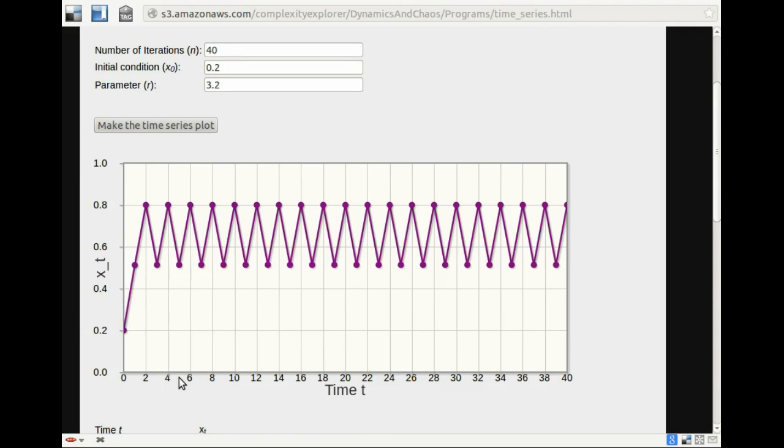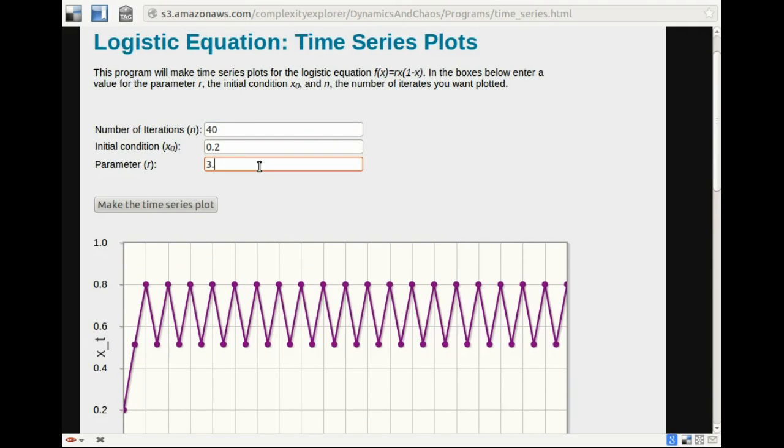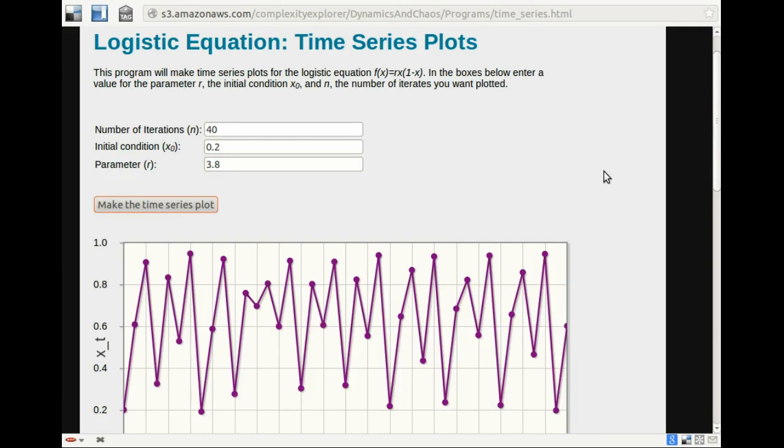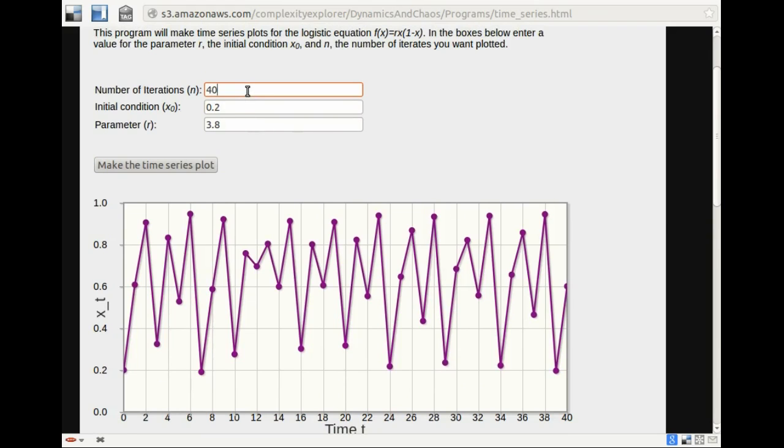Let me try one more. And I'll do 3.8. So I'll go up here, and I'll enter 3.8, make the time series plot. And it's a little hard to see what's going on here. It's not quite periodic. Maybe it wants to be periodic, but hasn't found the period yet. So in order to be sure, to see what's going on, I'm going to plot more iterates. Instead of 40, let's plot 200 and see if it becomes periodic or not.